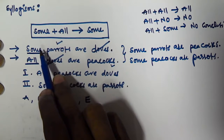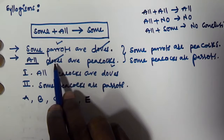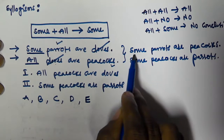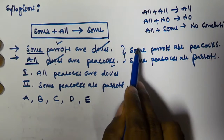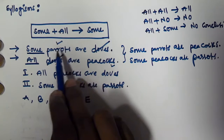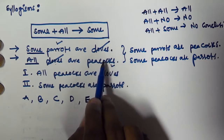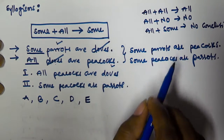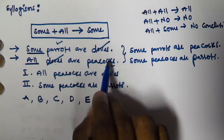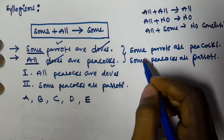Whenever the first syllogism starts with 'some' and the second starts with 'all,' and the predicate of the first equals the subject of the second, the resultant conclusion starts with 'some.' You can take the subject of the first syllogism or the predicate of the second syllogism as the subject in the conclusion — giving two possible derived conclusions.